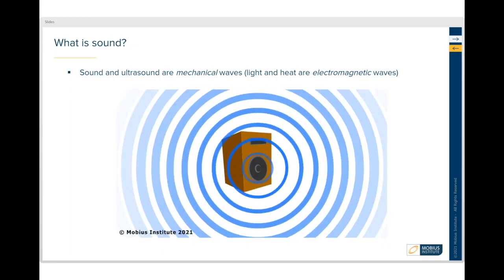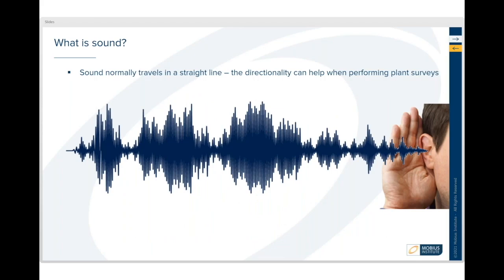Sound travels in a straight line unless it hits something and reflects, but that's one of the characteristics of being directional that can be very helpful. You can be in a plant and use your device to search for leaks and other sounds, and because it's traveling in that straight line you can more easily identify where the problem exists.